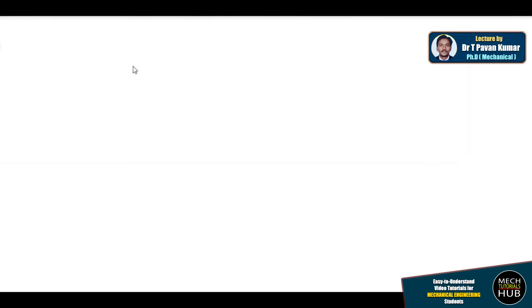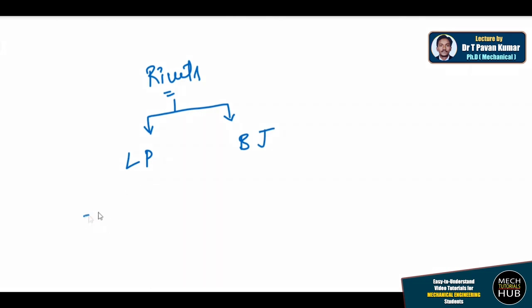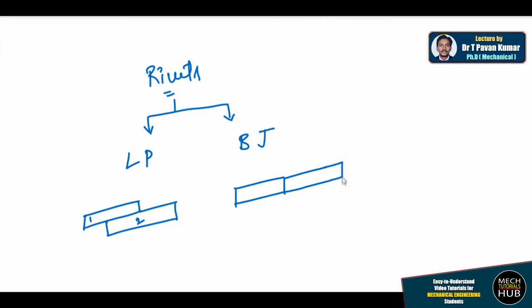I will briefly explain what riveted joints are. Rivets is the topic we are discussing, and we have seen two types of joints: lap joint and butt joint. A lap joint means placing one material over the other — two different sheets placed one over the other to work like a single element. A butt joint is arranged side by side. The type used depends on the requirement of the customer or application.